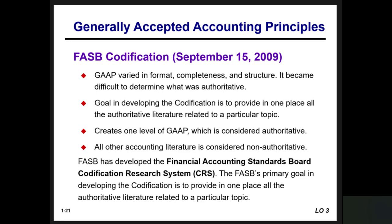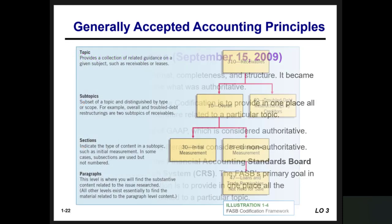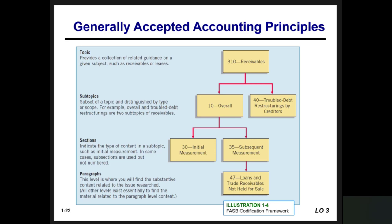FASB developed the Financial Accounting Standards Board Codification Research System (CRS). Previously, each board — the APB and its predecessors — issued different types of opinions, statements, and bulletins, creating a complex hierarchy of authority. In 2009, they created a system with one authoritative level: the information in the codification standards. This made it much easier. The codification is set up with a topic, subtopic, section, and paragraph. For example, 310 represents receivables, with different numbers representing different subtopics down to the section and paragraph level.